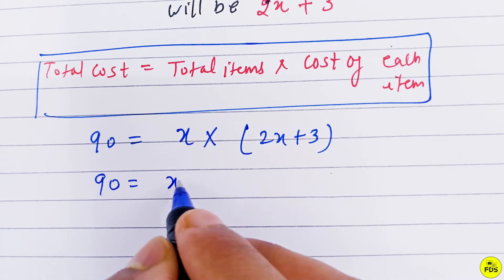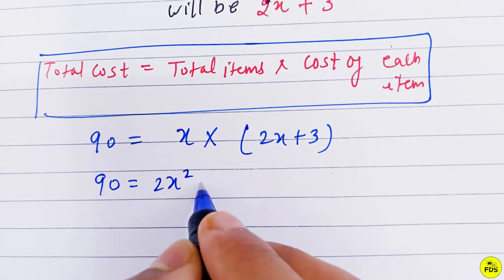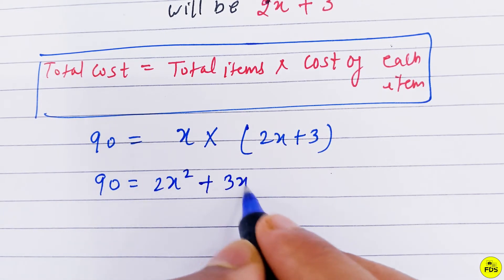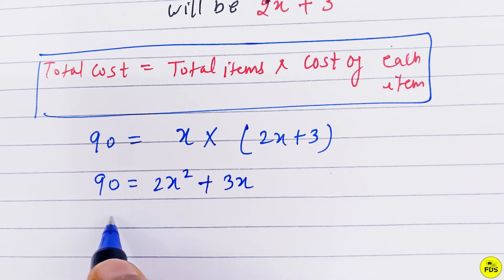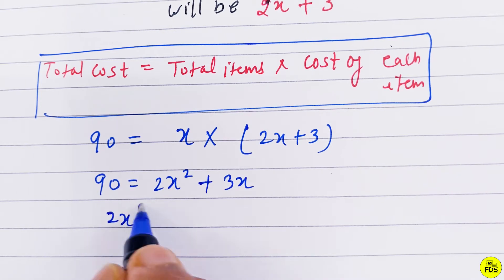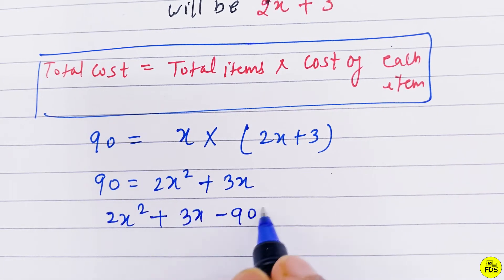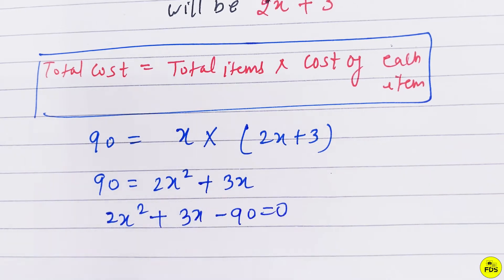So, 90 = 2x² + 3x. Rearranging, we get 2x² + 3x - 90 = 0.